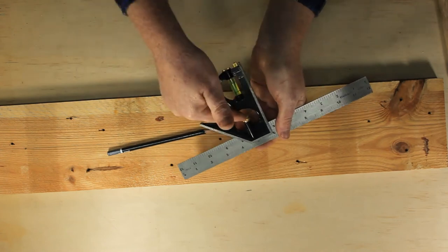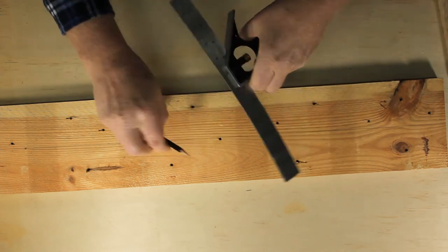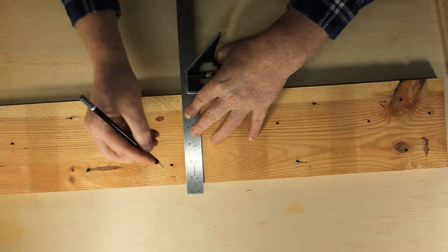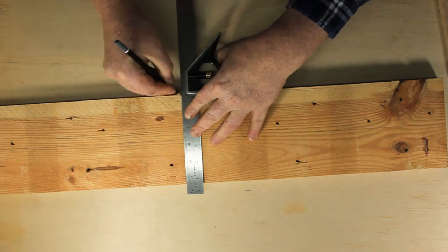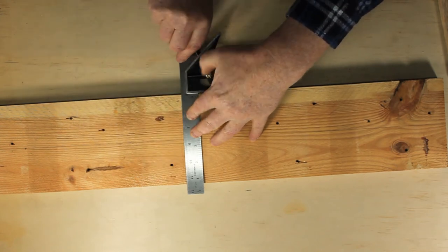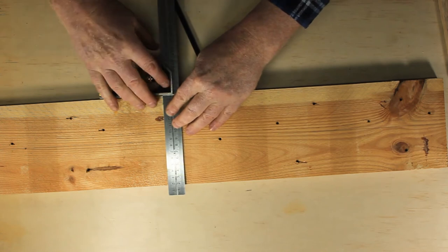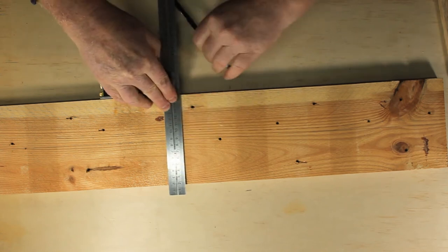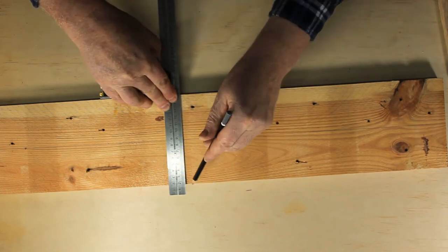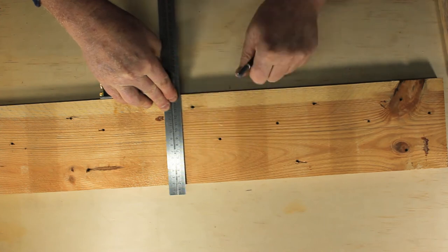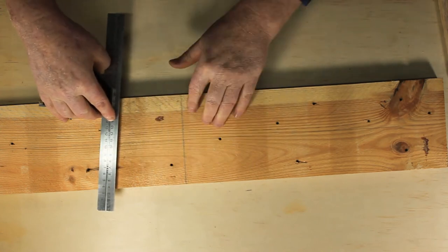Make sure that the adjusting screw is tight, lay the square on a board and draw a line. Flip the square over, lay it next to your original line and draw it again. You should end up with a tidy parallel pair of lines.